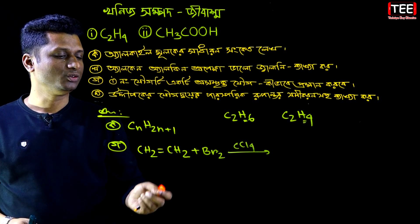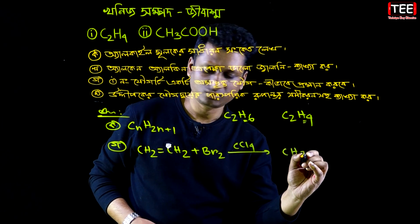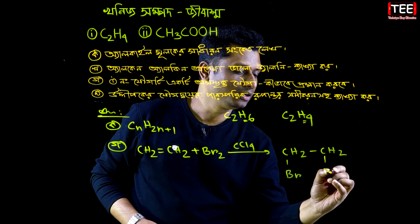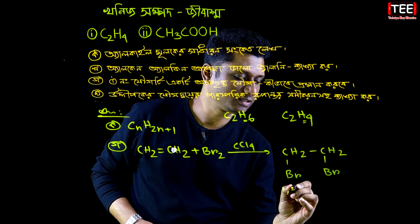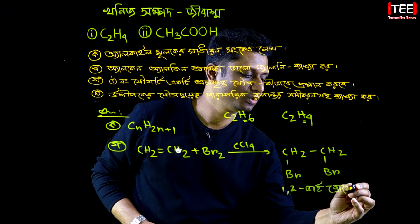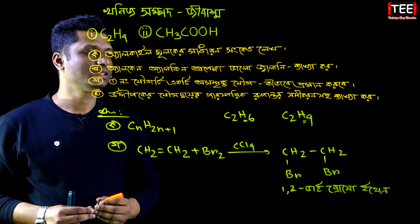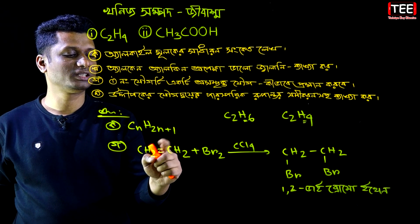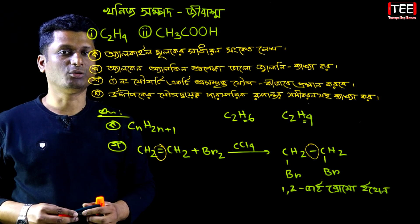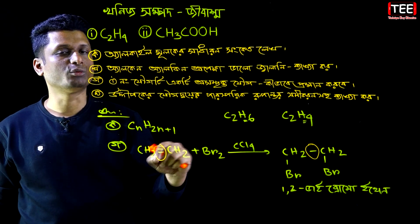We have CH₂=CH₂ (ethene) — a double bond with 2 carbons and 2 bromines added. The name of the product is 1,2-dibromoethane. The other reactant is ethene with a double bond, which becomes a single bond.